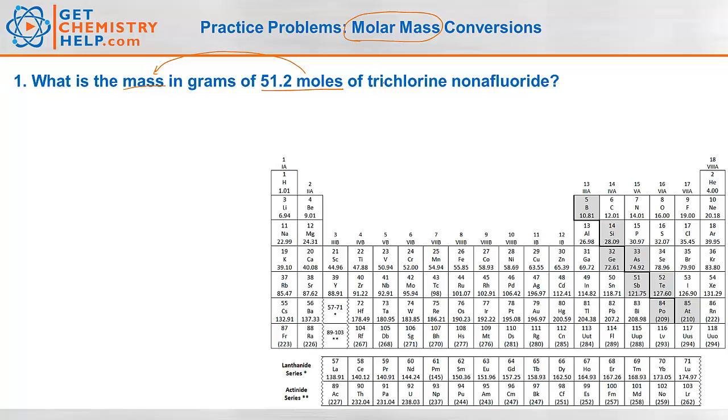Well, the first thing we have to find is what is the molar mass of trichlorine nonafluoride. Well these prefixes tri and nona tell me that it's a molecular compound. So as we saw in our lesson on molecular compounds, trichlorine means three chlorines, nonafluoride means nine fluorines. So I need to find the molar mass of this. So I'm going to add up three chlorines and nine fluorines.